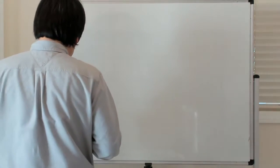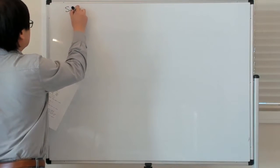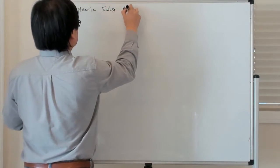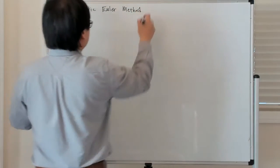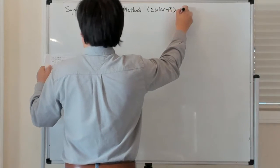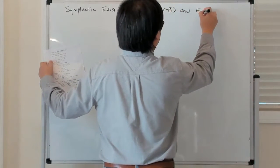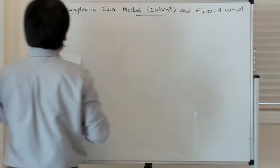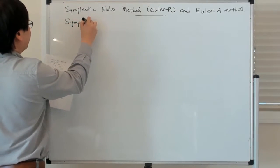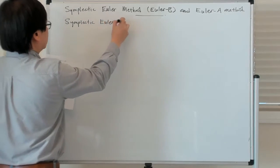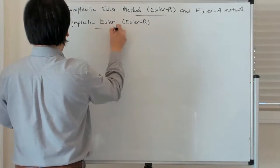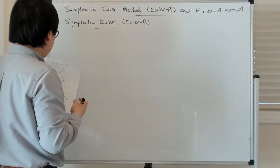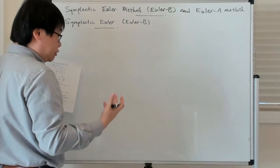Let's look at the symplectic Euler method and the Euler A method. The symplectic Euler method is sometimes referred to as Euler B, and we're going to look also at the Euler A method. The symplectic Euler method is interesting because it involves evaluating the vector field at the initial position and the final momentum.